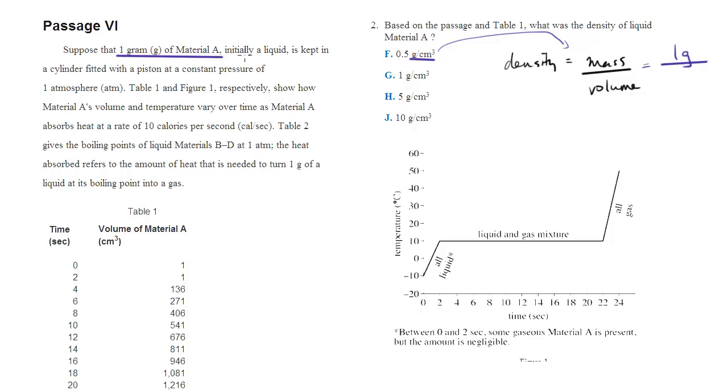Now, what about the volume? We're talking about the density of the liquid, so we're looking for the volume of this liquid. Notice it tells us that it's initially a liquid. If we look at table 1, time equals 0 is essentially our initial situation. And we can see that the volume of material A at that initial state is 1 cubic centimeter.